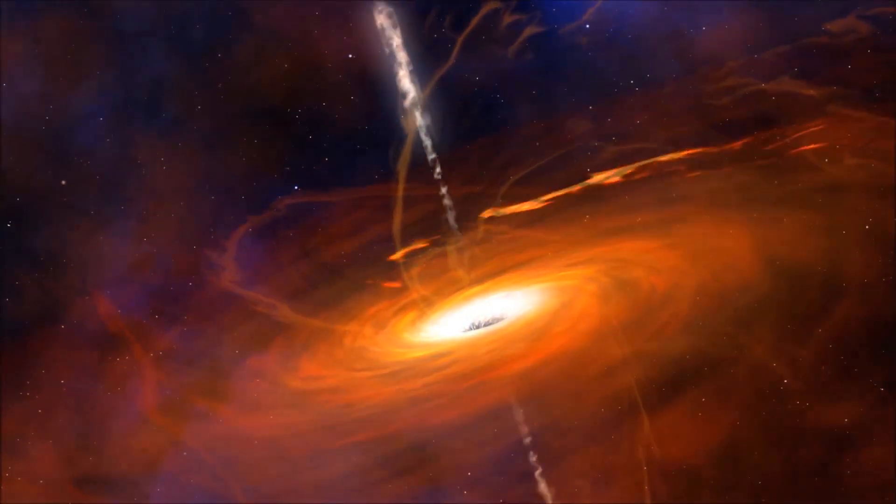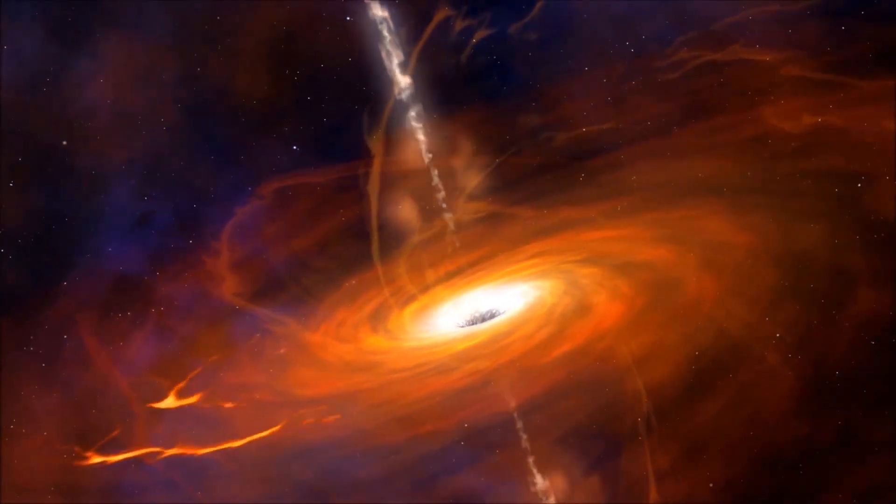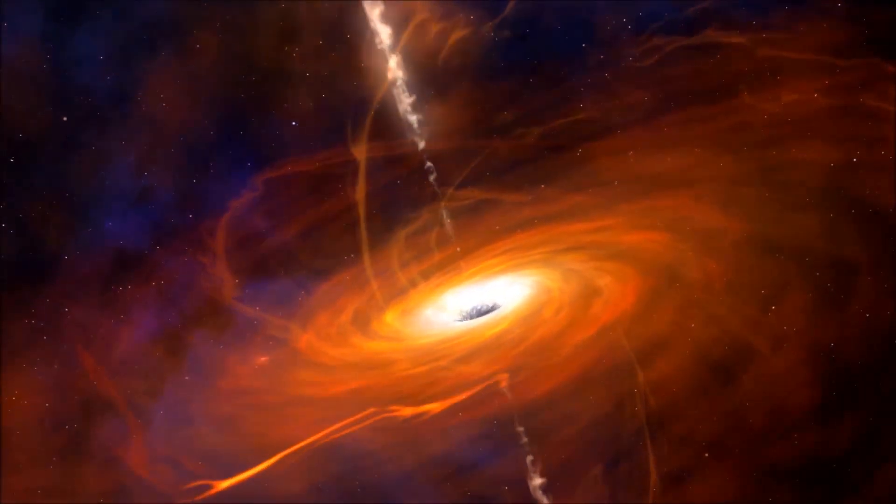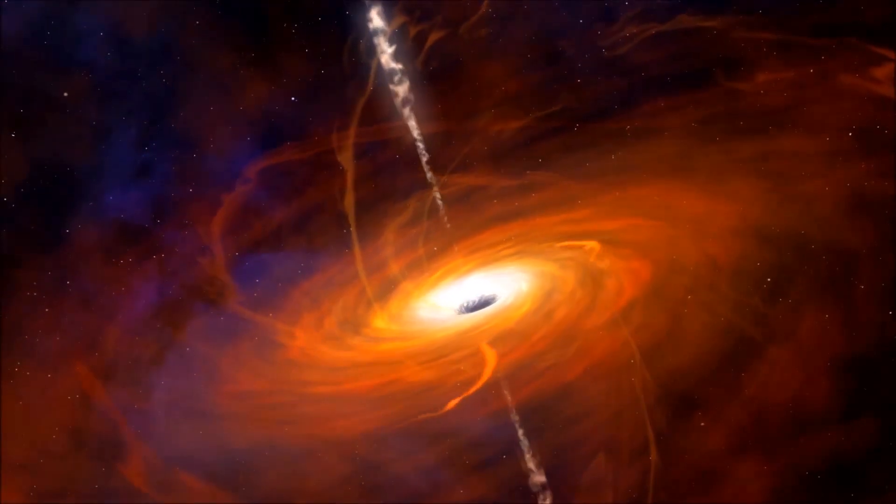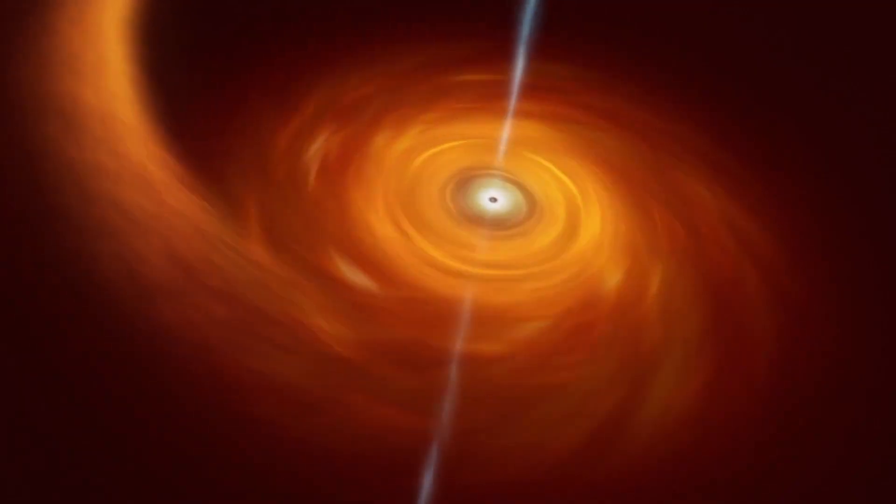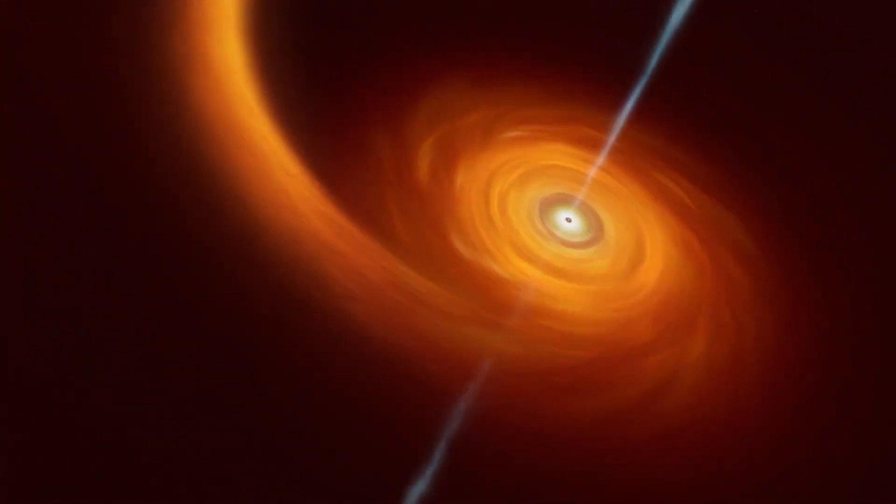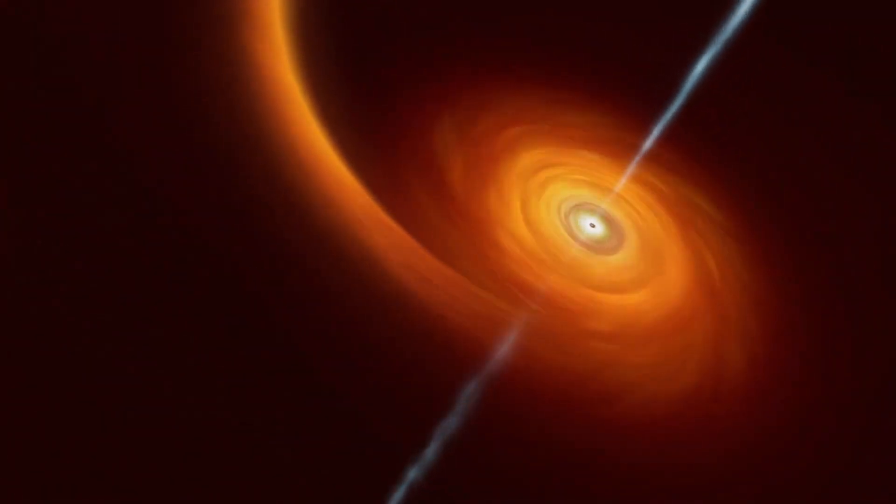The jets and bubbles have a profound impact on the environment and evolution of the Phoenix Cluster. They prevent the gas from cooling and forming stars in other galaxies in the cluster, making them very quiet compared to Phoenix A. They also stir up the gas and prevent it from collapsing under its own gravity, which could lead to more massive black holes forming.